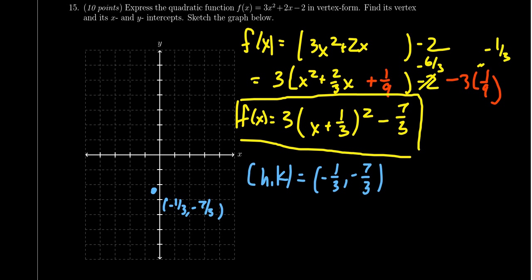We want the y-intercept. The y-intercept we can actually find from the original function. If you plug in x equals 0, you're going to get negative 2 as your y-intercept. So that's actually really close to negative 7 thirds. So draw it right here. So we're going to get 0, negative 2.